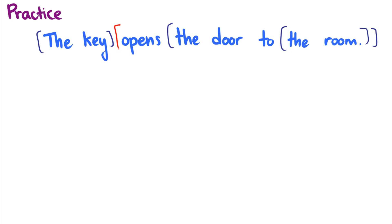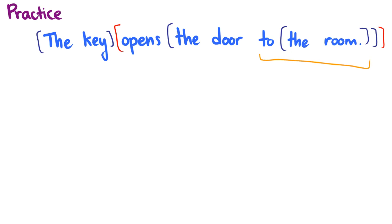What about the verb phrase? Can we check it? 'The key falls' — 'falls' is a verb phrase, and 'opens the door to the room' is a verb phrase, so we can replace them with each other. 'The key falls' — that works. That's the substitution test; we've got a nice structure: a noun phrase 'the key,' a verb phrase, and the direct object 'the door to the room.' What about 'to the room'? We can use the Q&A test: 'The key opens the door where?' — 'to the room.' So with the question and answer test, we find that 'to the room' is a constituent.